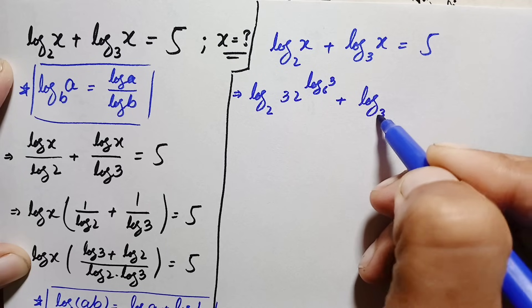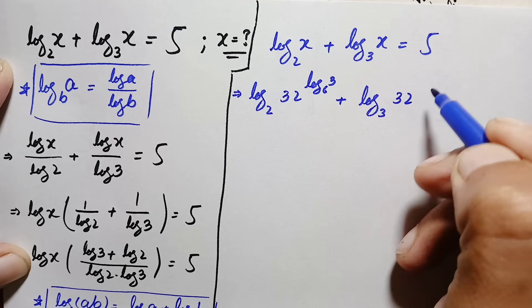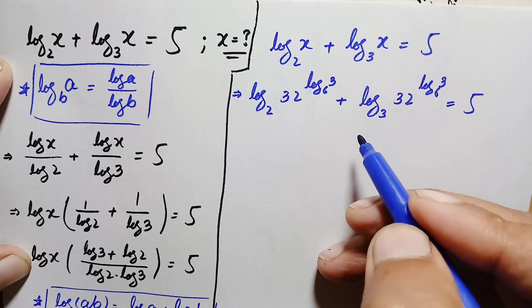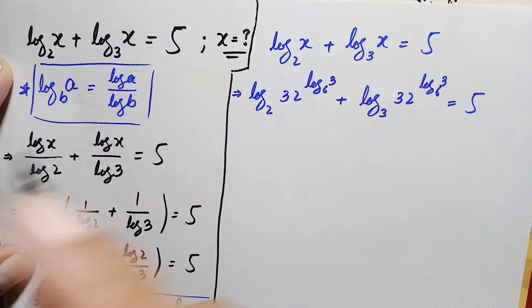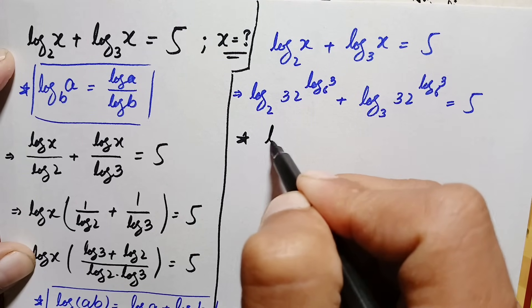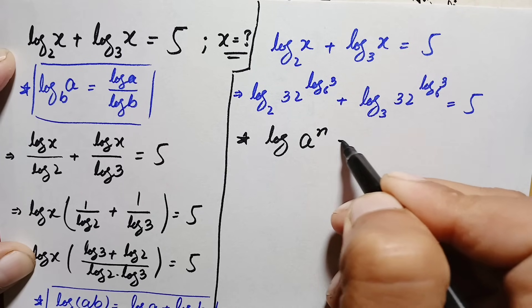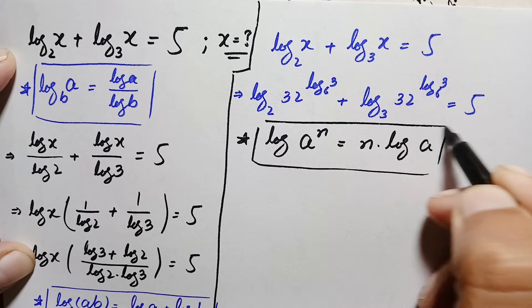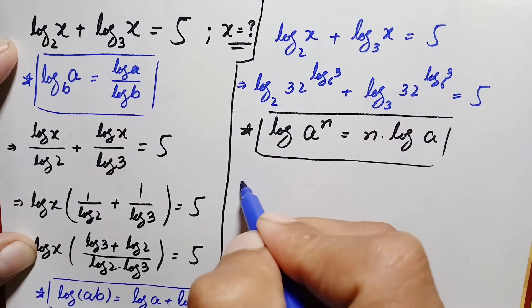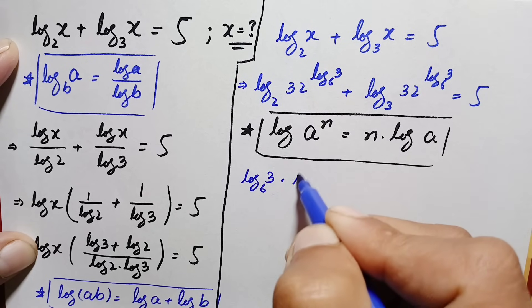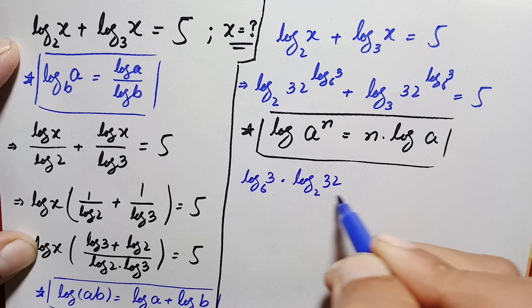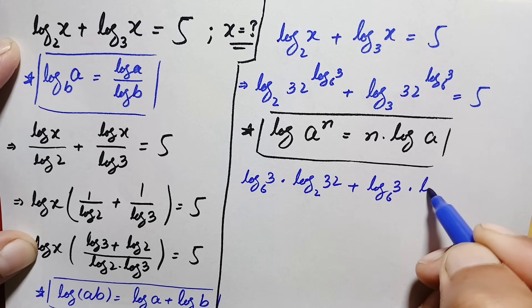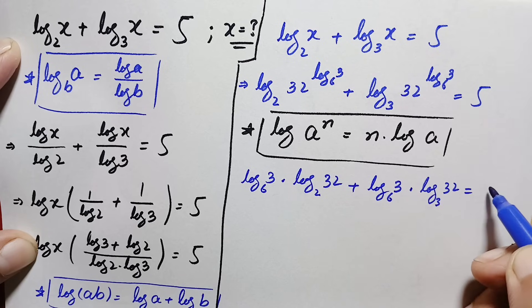In the left hand side we use the logarithm power property: log of a raised to power n equals n times log of a. Applying this, the left hand side becomes: log of 3 with base 6 times log of 32 with base 2, plus log of 3 with base 6 times log of 32 with base 3, is equal to 5.